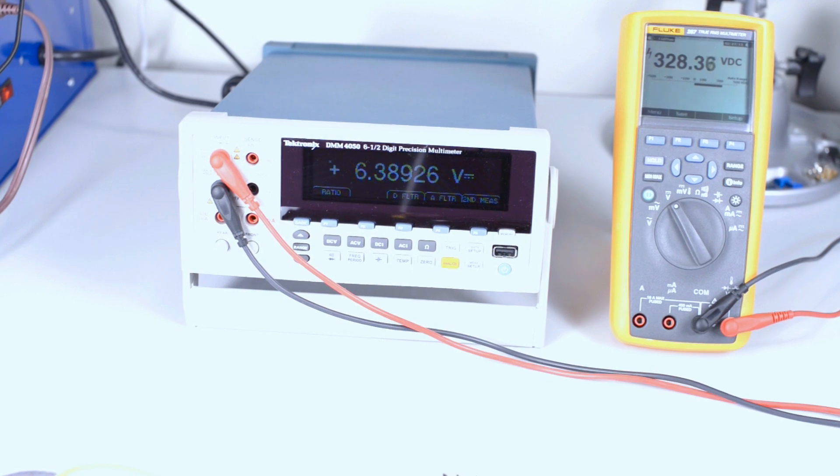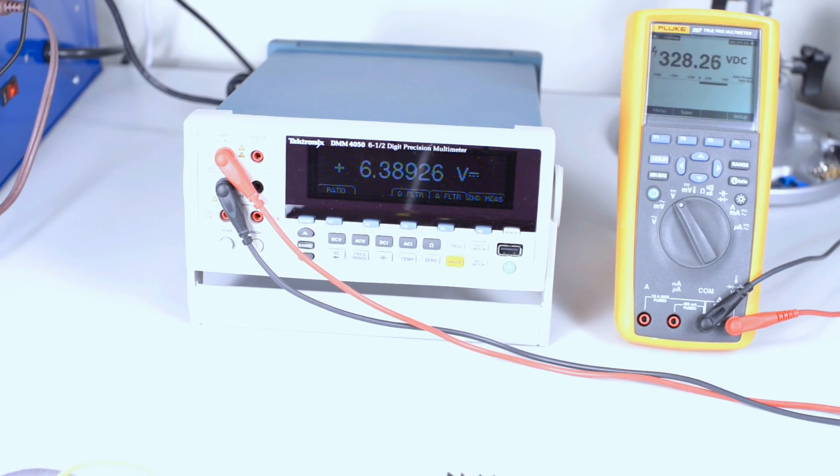On the left you can see Tektronix connected to the filament bus of the power supply, and Tektronix measures 6.38 volts DC. You see no movement on the scale of the meter. That is how well stabilized the filament voltage is. On the right you can see Fluke which measures 328 volts DC with almost no movement on the meter. This is how well stabilized B-plus DC voltage is.